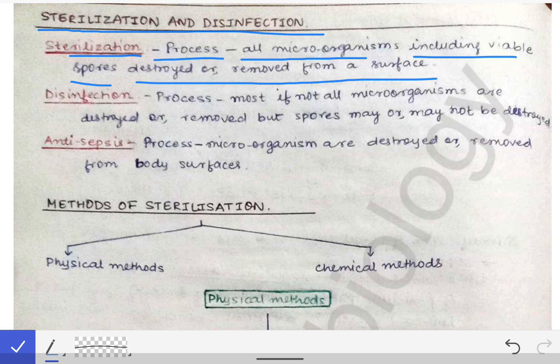Spores are formed by bacteria in unfavorable conditions. When those spores including all the microorganisms are removed, the process is called sterilization. Disinfection is the process by which most, if not all, microorganisms are destroyed or removed.